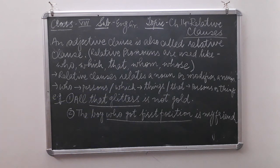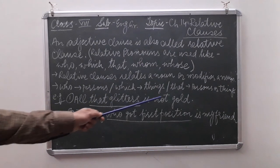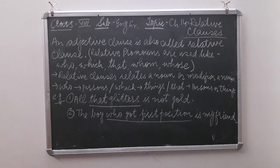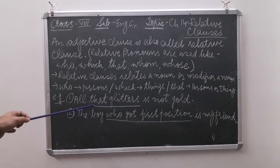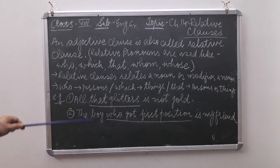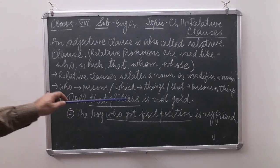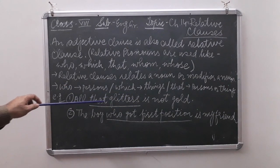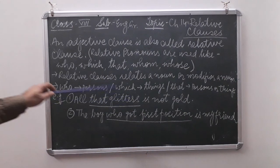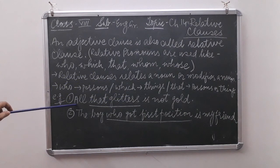Whenever we talk about a relative clause, it means it will relate a noun in the sentence. For example: 'All that glitters is not gold.' Here, 'that glitters' describes what glitters — everything, all things — so 'that glitters' is a clause, specifically a relative clause, because it relates a noun or pronoun.